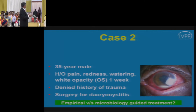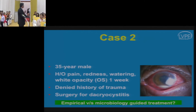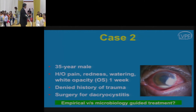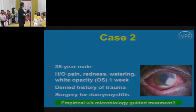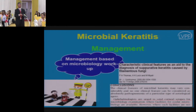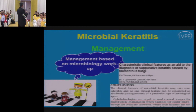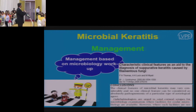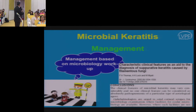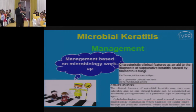Textbooks say every corneal ulcer patient should have corneal scraping and detailed microbiology, but in practice, many patients do not undergo microbiology, and results are often negative. Although clinical signs can suggest the causative organism, there is significant overlap. The standard practice, if microbiology is accessible, is to perform a detailed workup for every corneal ulcer patient to guide directed therapy.